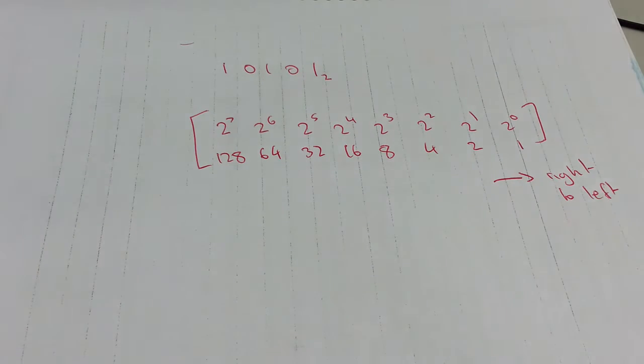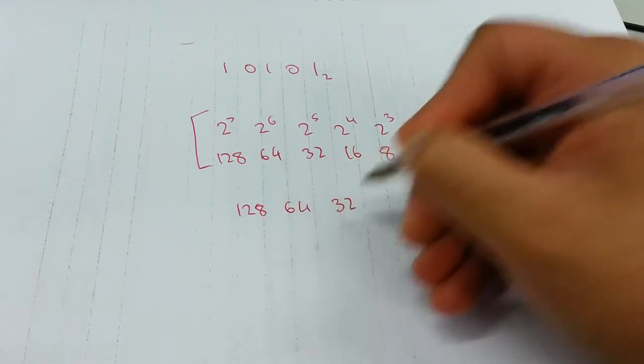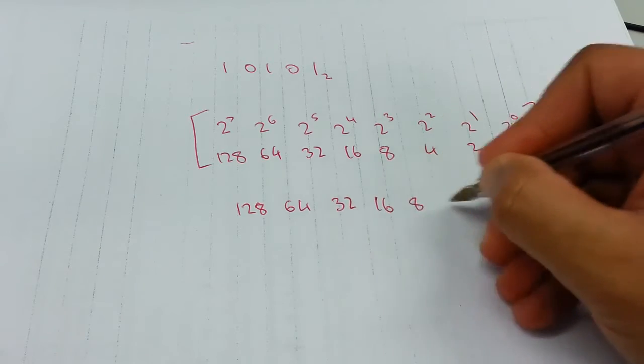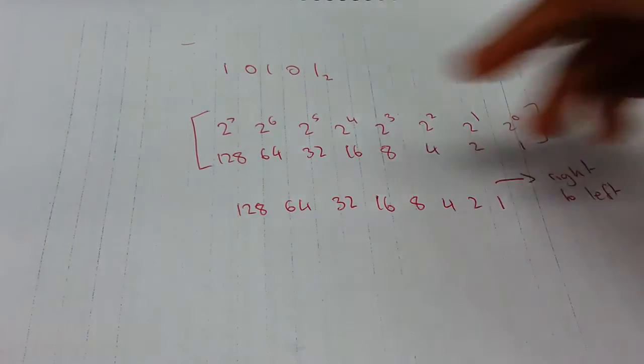The next thing you need to do is write the digits of the binary number below the corresponding powers of 2. So if I had 128, 64, 32, 16, 8, 4, 2, 1...